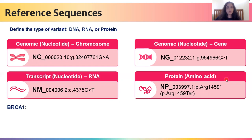Next, we have an NM ID, which talks about mRNA or coding RNA types, followed by the NP ID, which talks about protein changes or amino acid changes. For one particular gene, we would typically have a unique NC and a unique NG ID. However, for the same gene, we will most likely have multiple NM and corresponding NP IDs.